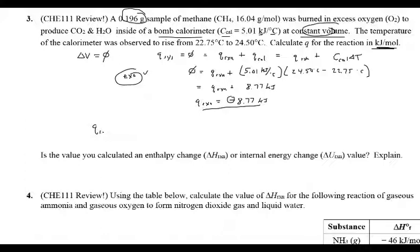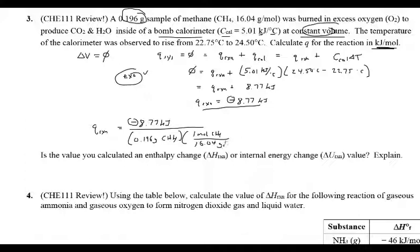Now we need kilojoules per mole. This is when you bring in the mass — don't start plugging in the mass of methane right at the beginning; get your heat first. Q of the reaction is negative 8.77 kJ. Now we divide by the moles: we have 0.196 grams of methane, multiplied by 1 mol CH4 over its molar mass in grams. Dividing by moles doesn't change the exothermic sign. I get something on the order of negative 718 kilojoules per mole.